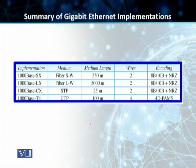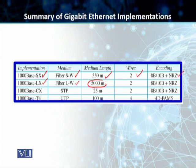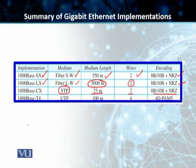Let's summarize the different implementations. 1000Base-SX uses short wave fiber, medium length of 550 meters, two wires, and NRZ with 8B/10B encoding. 1000Base-LX uses long wave fiber, increasing the medium length to 5,000 meters for long-haul links, two wires, and NRZ with 8B/10B encoding. 1000Base-CX uses STP for only 25 meters, two wires, and 8B/10B with NRZ. Finally, 1000Base-T supports existing UTP installations with a length of 100 meters, a four-pair wire configuration, and 4D-PAM5 encoding.